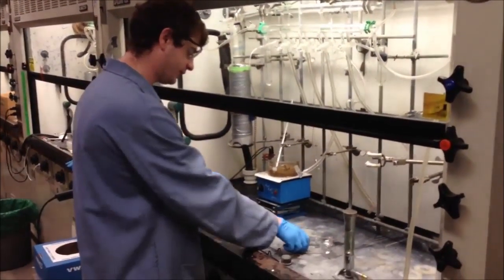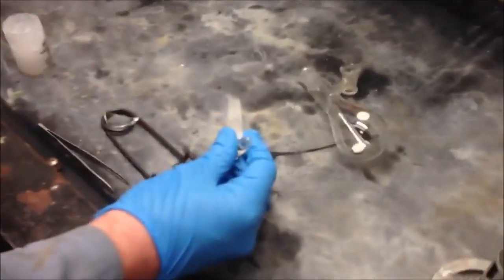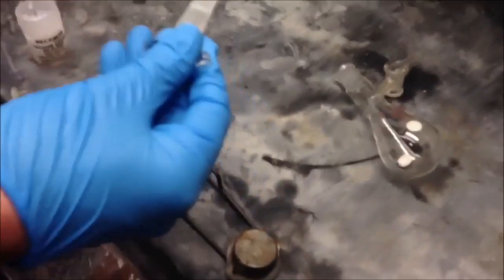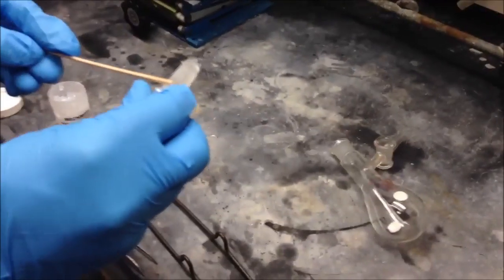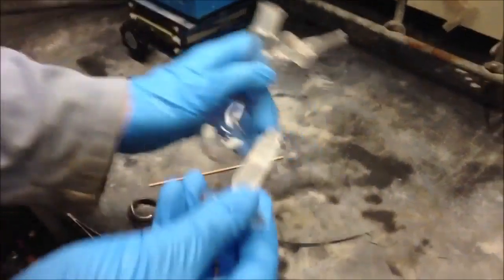I'm going to first grease the stopcock. So this is a small amount of vacuum grease, and this is going to ensure a tight seal between the glassware so that no air gets in.